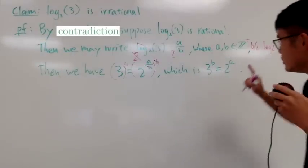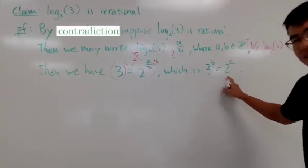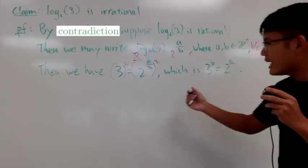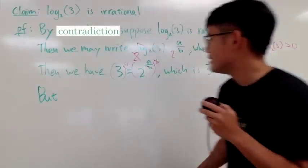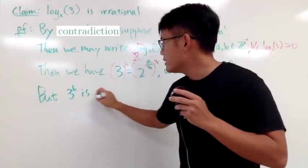But you have to remember, a and b are positive integers. And in fact, this is not good at all. Because we see that, I'll just say, however or but, but...